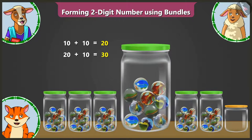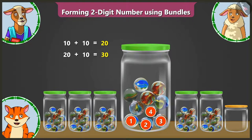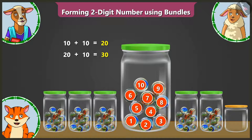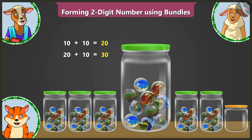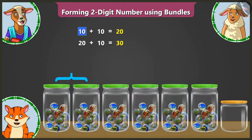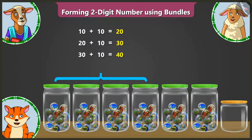Now, Lily, you count the marbles in the fourth jar. In the fourth jar there are 1, 2, 3, 4, 5, 6, 7, 8, 9 and 10 marbles. Absolutely right. So these are 10 and 10, 20, 20 and 10, 30, 30 and 10, 40 — 4 groups of 10s.